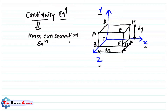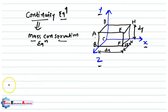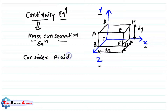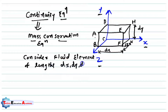For the derivation of the continuity equation, or mass conservation equation, the name suggests mass conservation — it means mass flow inside phase ABCD and mass exiting at phase EFGH, with similar inlet and outlet conditions in the z direction. For that purpose, we consider a fluid element of length dx, dy, and dz in the direction of x, y, and z.